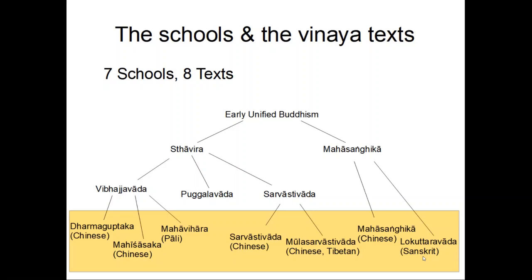When we translate texts into other languages we lose a bit of meaning and information. It's fascinating to compare the Pali version with this Sanskrit Lokuttaravada version, especially because they are from such distantly related schools. Whatever these two schools agree on has a fairly good chance of being from the early unified period of Buddhism, before it broke into different schools.